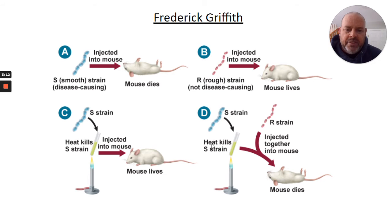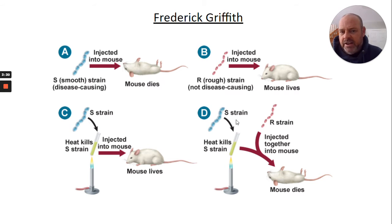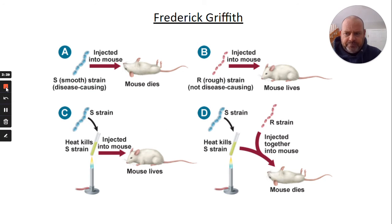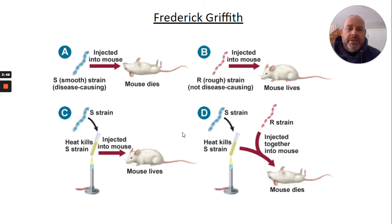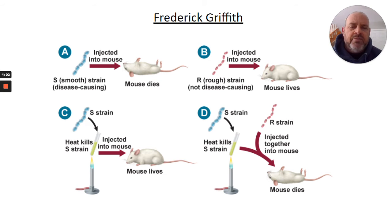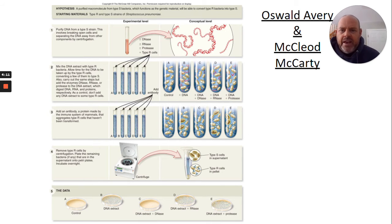The idea is that something — the disease-causing agent from the S strain — probably got into the R strain, which was still alive but normally isn't disease-causing. Could something from the disease-causing S strain have gotten into the R strain? The answer was probably yes, but what was it? Griffith didn't know. He just said something must have transformed that R strain into something that killed the mouse. This word 'transformation' is attributed to Griffith. But this is how science works — someone else sees what you did and tries to figure out what you couldn't.